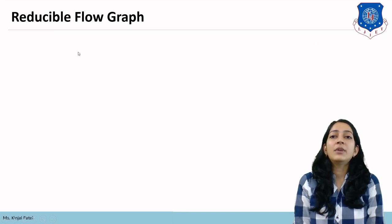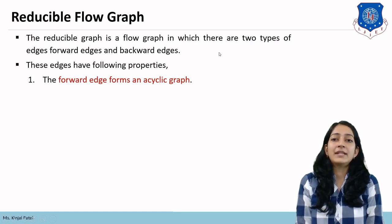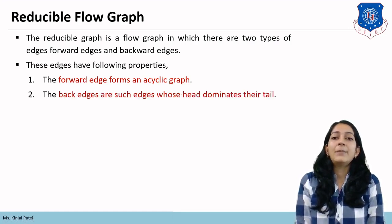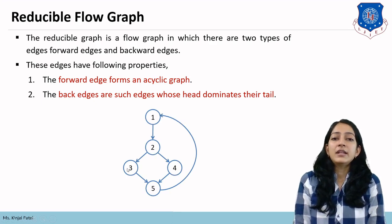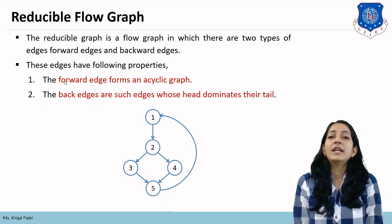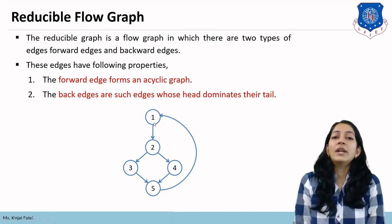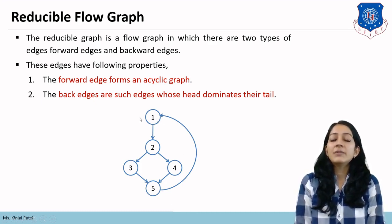Next is the reducible flow graph. A reducible flow graph has two types of edges: forward edges and backward edges. Forward edges form an acyclic graph, and back edges are edges whose head dominates their tail. In the example, the edge from 5→1 forms a loop where node 1 is the head and node 5 is the tail, making this a reducible flow graph that can be reduced by eliminating that back edge.